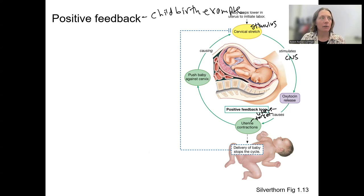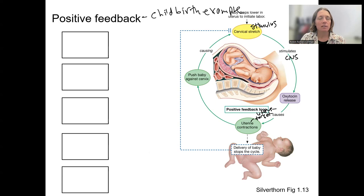But let's actually draw out this feedback loop with our boxes. So our stimulus is baby dropping, which stretches the uterus, stretches the cervix first.